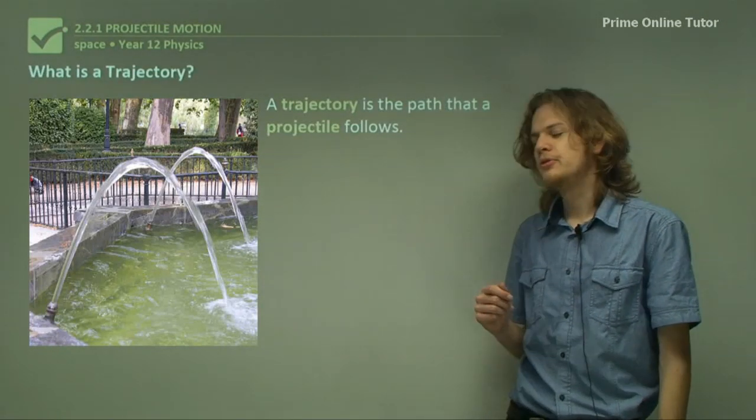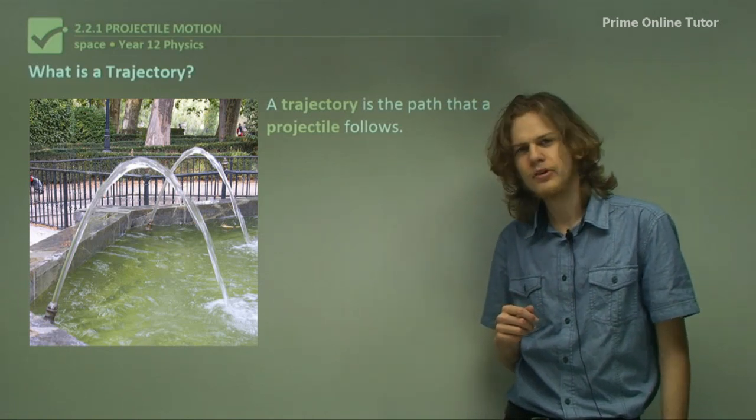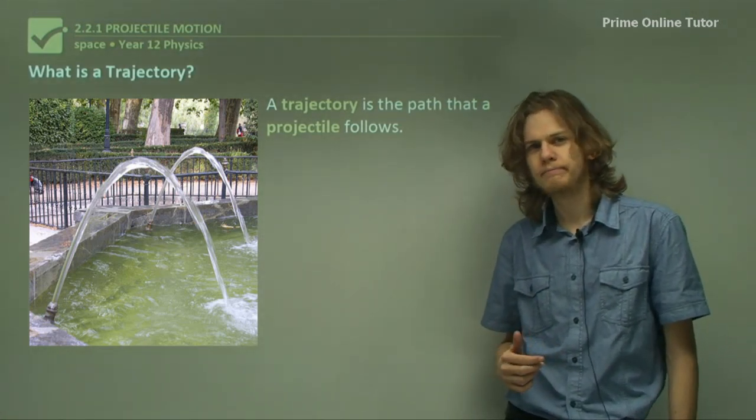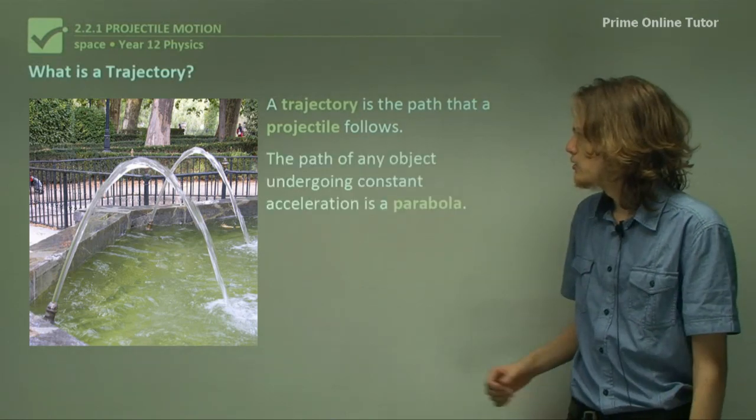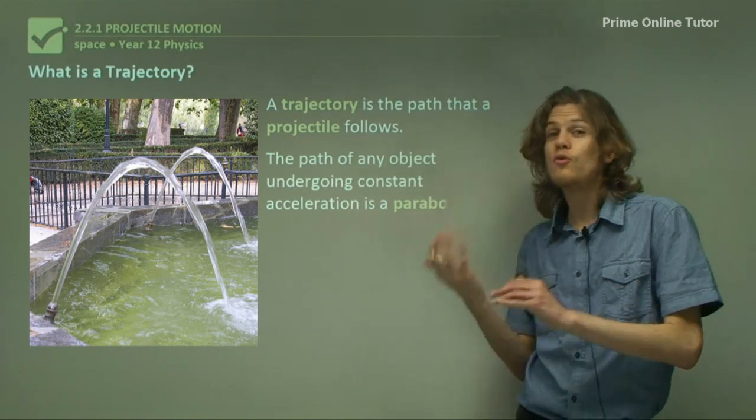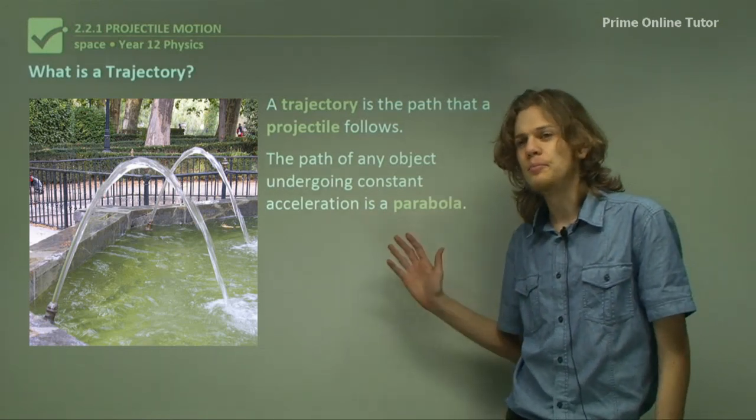A trajectory is the path that a projectile follows. It tends to be curved, like what we can see over here. The path of any object undergoing constant acceleration, whether that acceleration is due to gravity or otherwise, is going to be in a parabola.